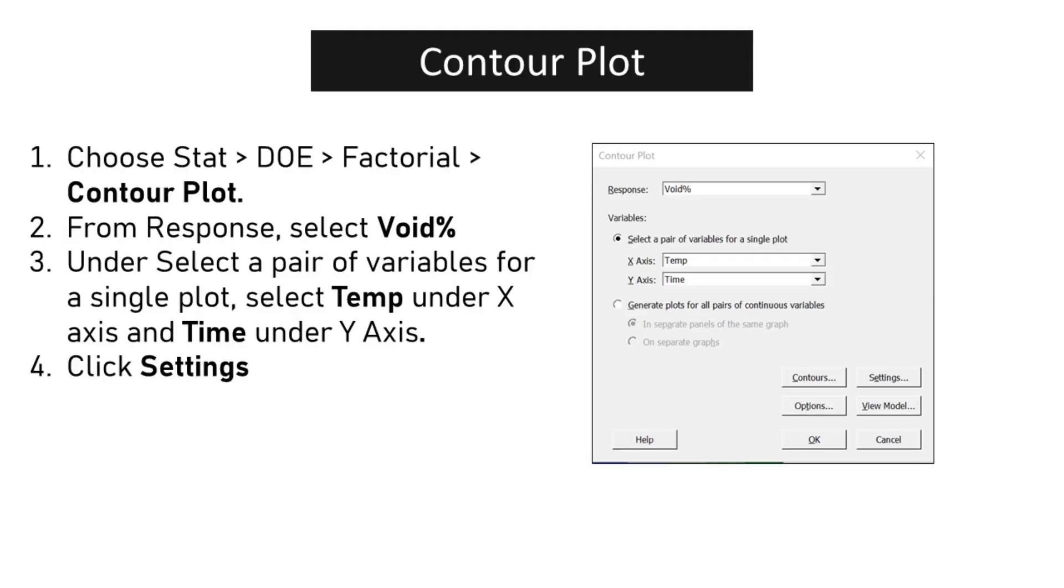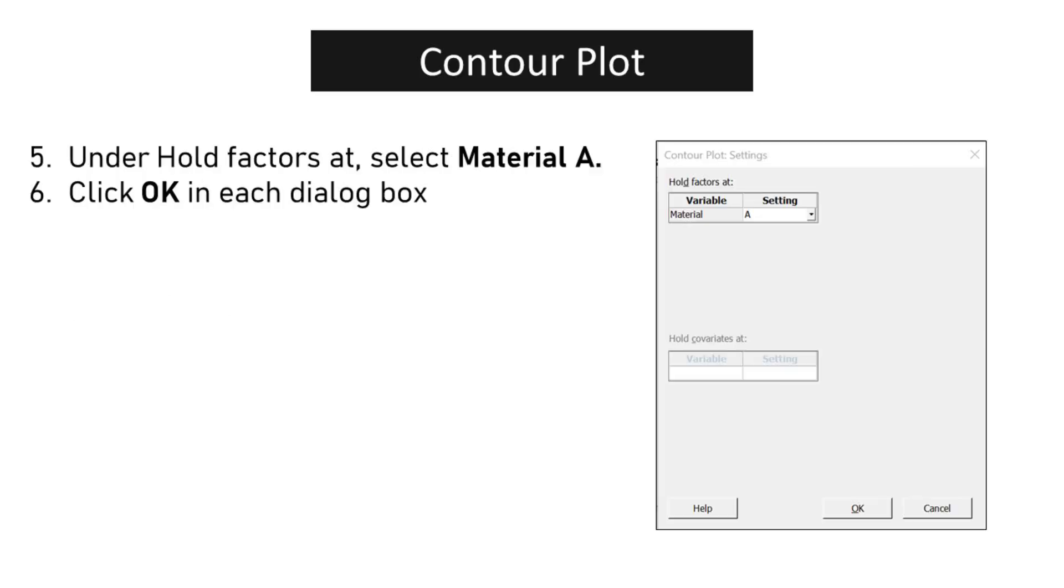Choose STAT, DOE, Factorial, Contour Plot. From response, select void percent. Under select a pair of variables for a single plot, select temp under x-axis and time under y-axis. Click Settings. Under hold factors at, select material A. Click OK in each dialog box.